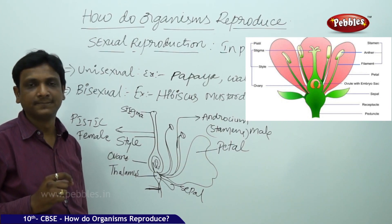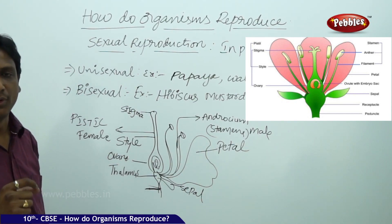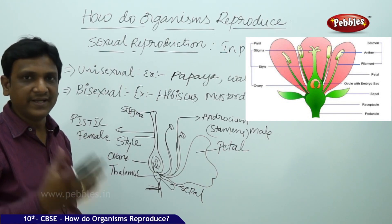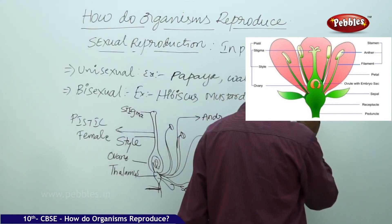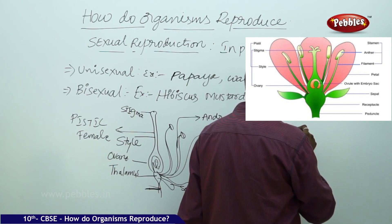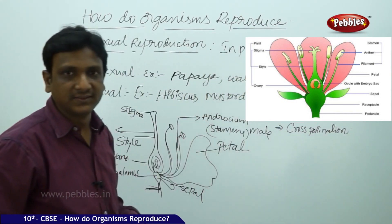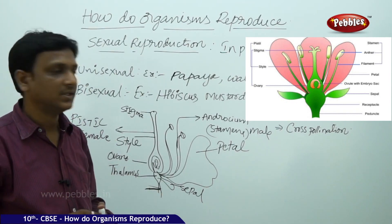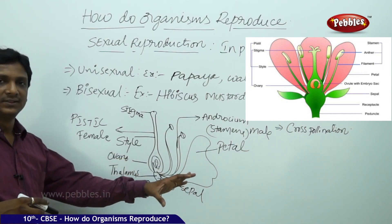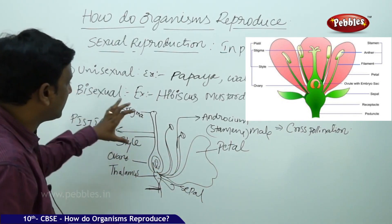From there the transfer of male gametes takes place. Not only insects — wind, water, and other means are also helpful. Various natural agents are helpful in the process of pollination. Pollination is the transfer of pollen from anther to stigma of a flower. If it takes place within the flower, you call it self-pollination. If it takes place between two different flowers of the same species, you call it cross-pollination. The major contribution is done by insects for the transfer of pollen.